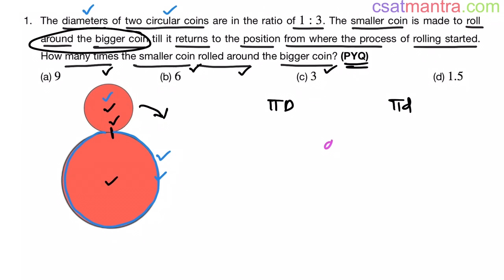Now the ratio of d to d is 1 is to 3. This is smaller, that is why d. This is bigger, so that is why capital d. Now from this I can write d as x and that d as 3x. Equivalent ratios. Now perimeter of bigger circle is pi into capital d that is 3x, perimeter of smaller circle is pi into small d x. So 3 pi x, this is pi x.